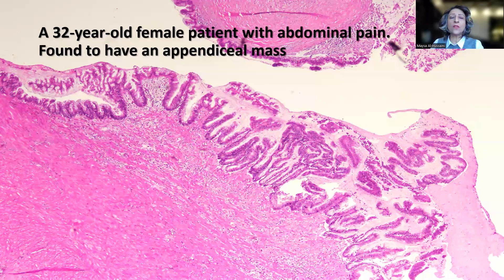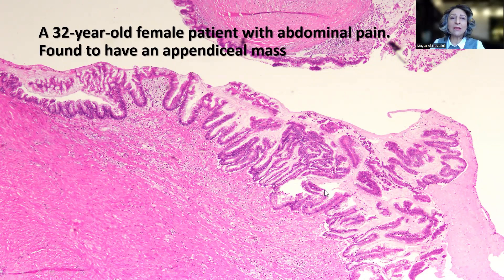This is a case of a 32-year-old female patient who presented with lower abdominal pain and was found to have an appendiceal enlargement suspicious for a mass. This is the low-power magnification of the resected appendix.